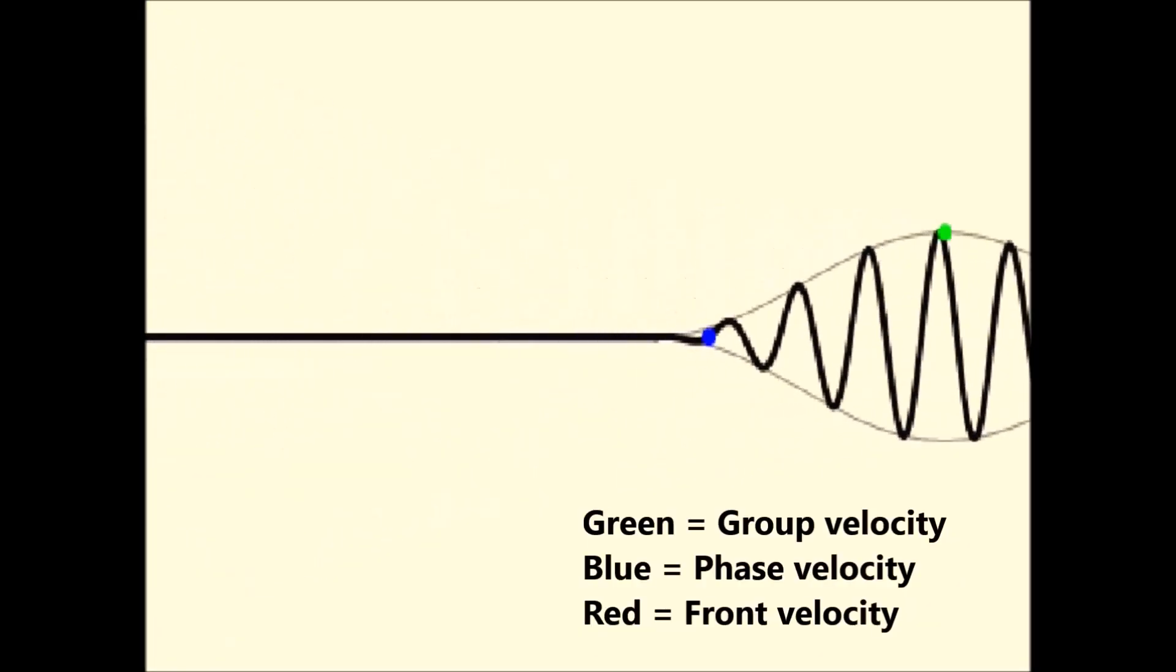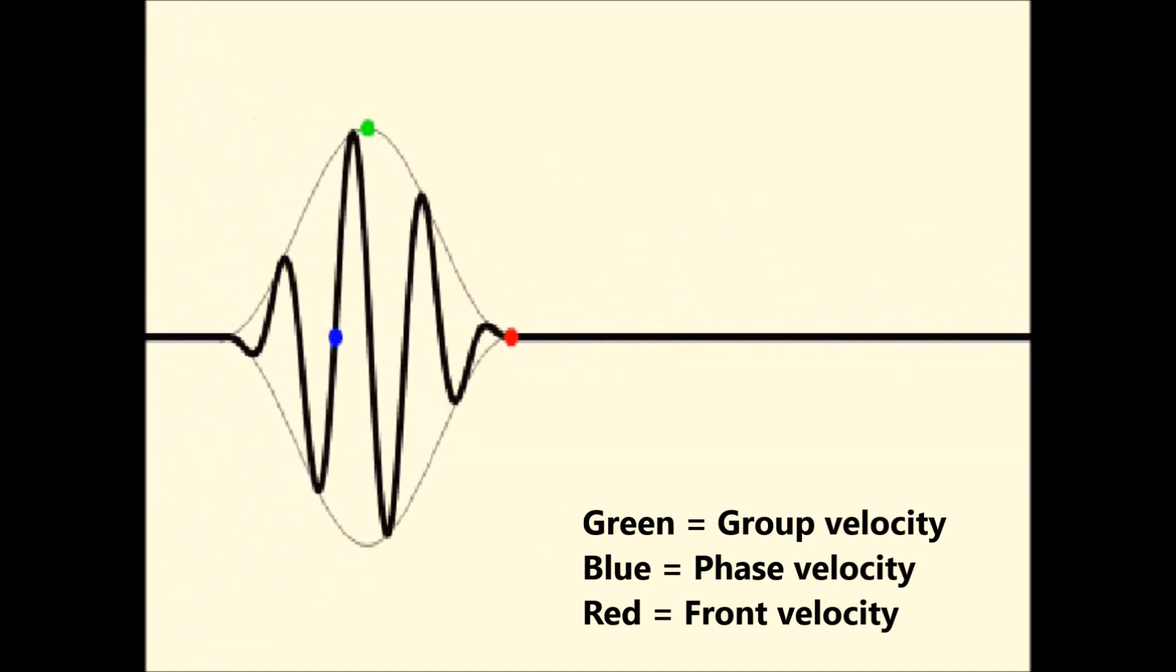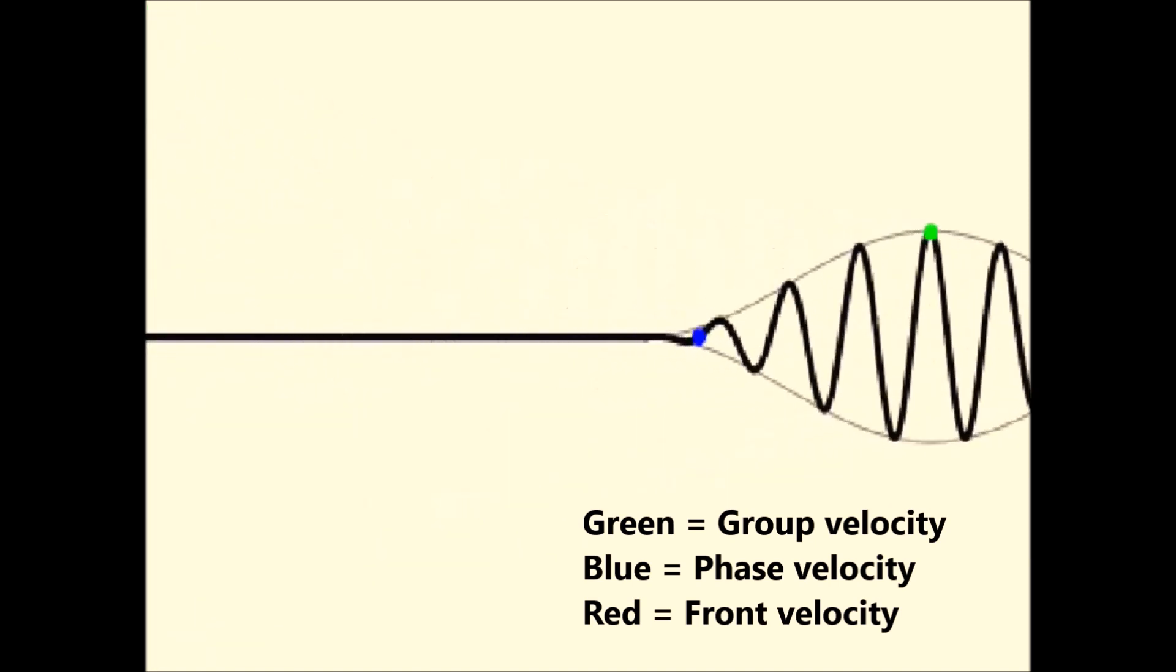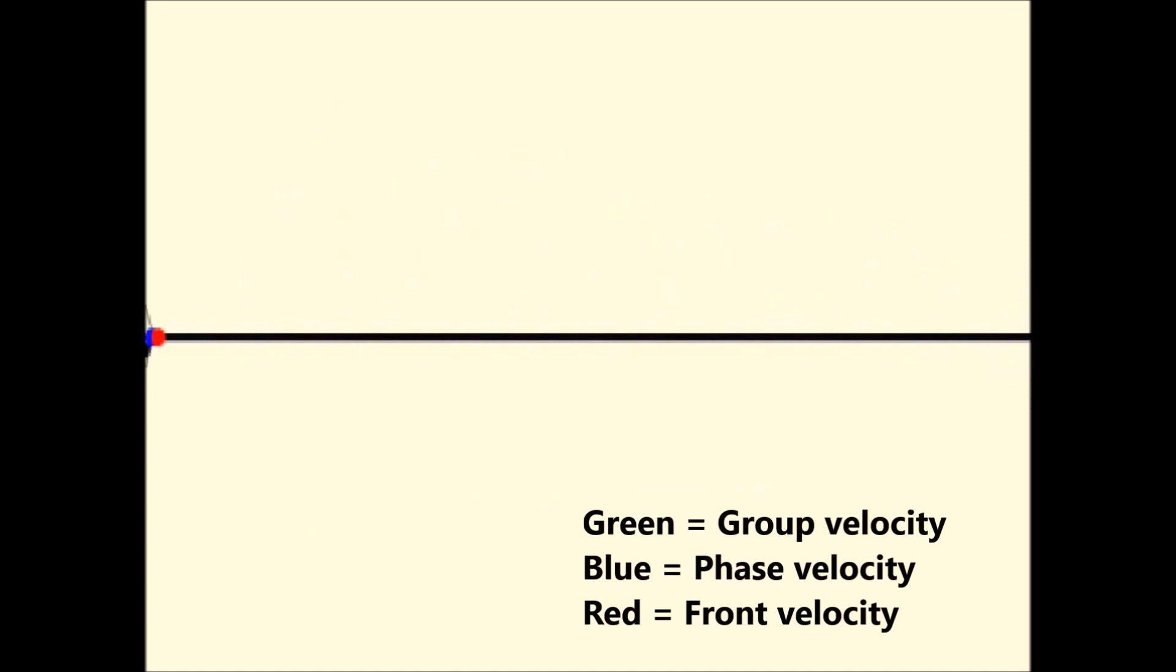So let's recap. Group velocity and phase velocity do not carry energy or information, so even though they can be faster than the speed of light, that doesn't mean that light itself can be transmitted faster than c.